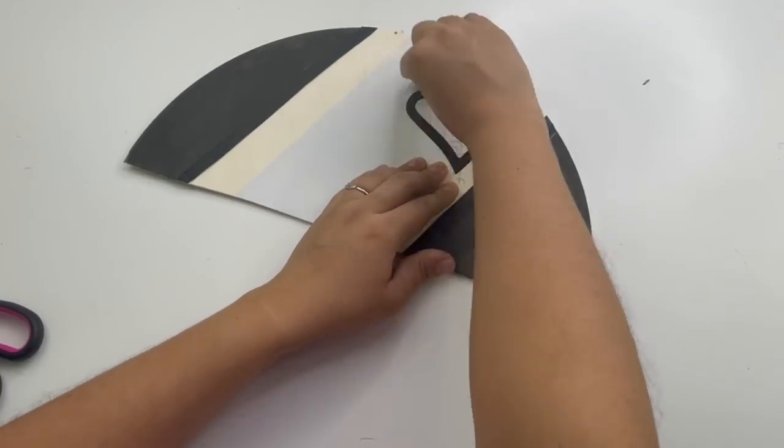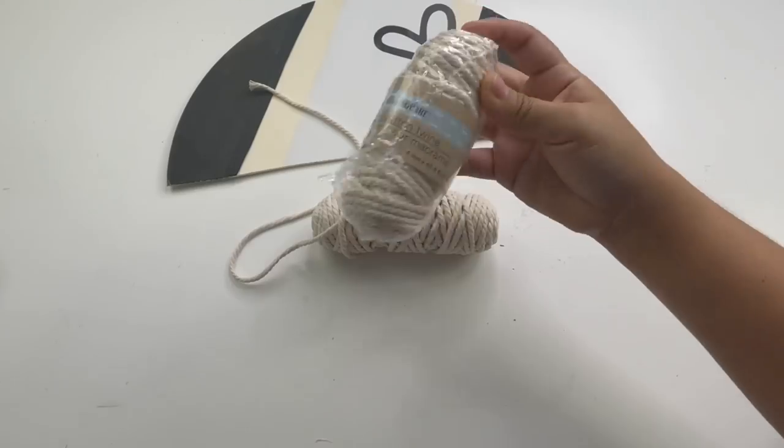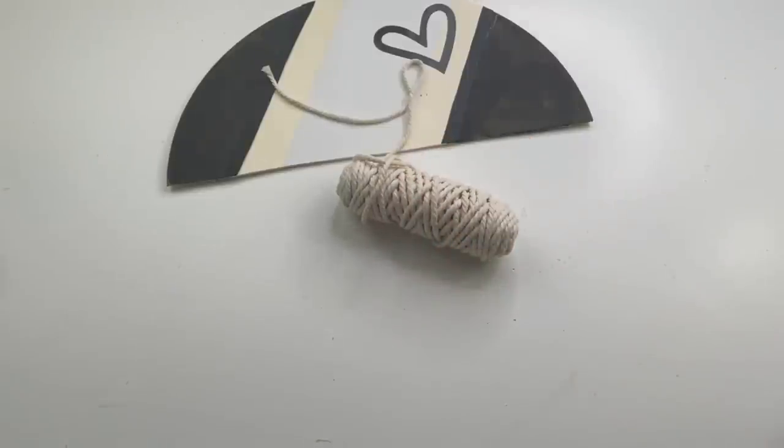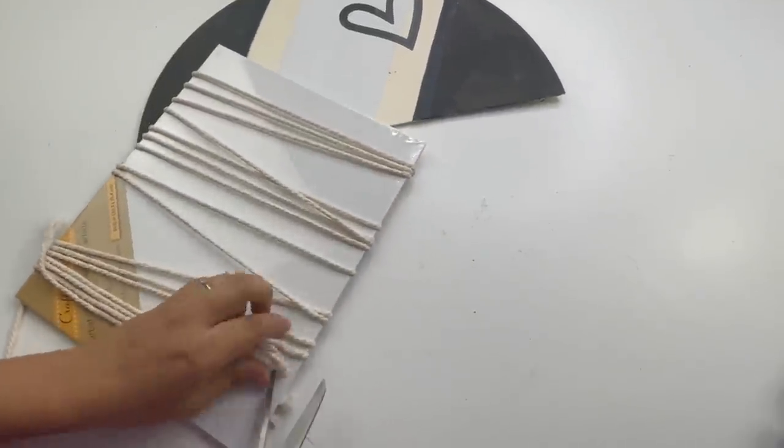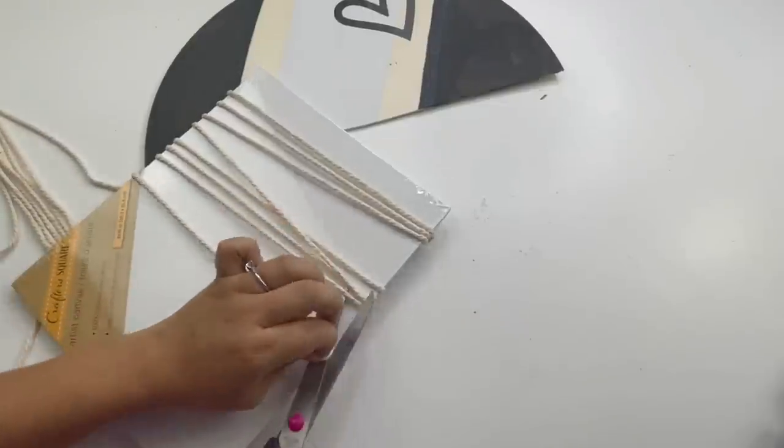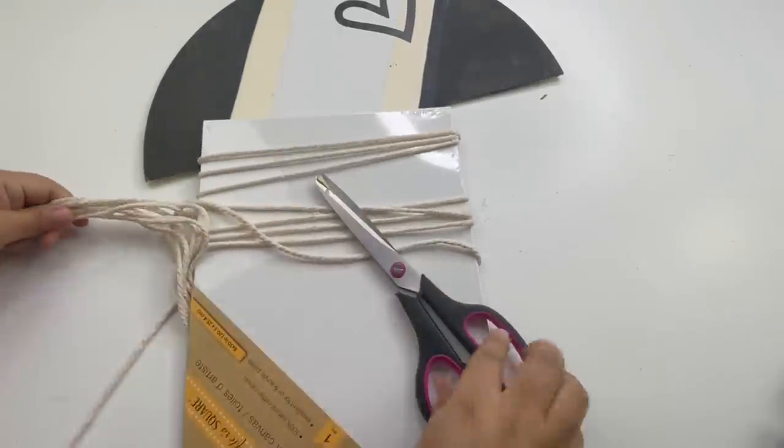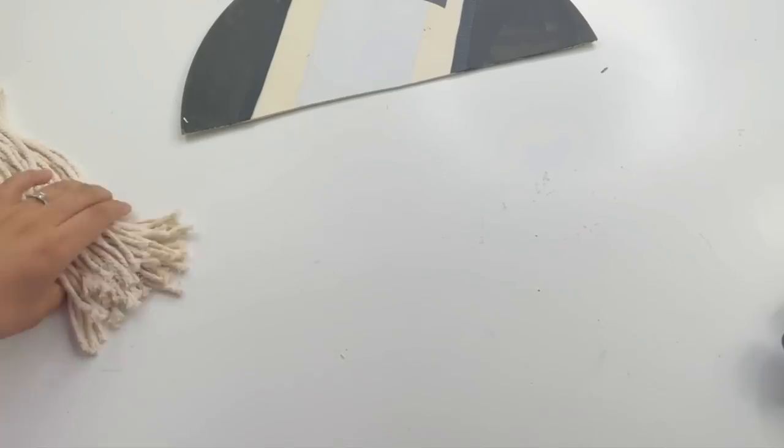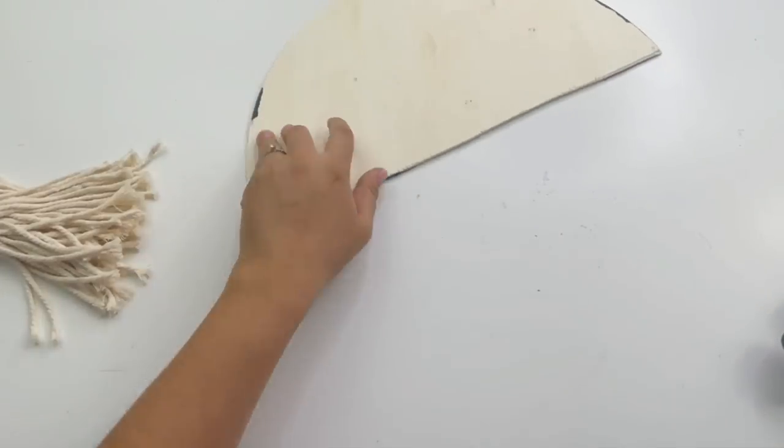Now using this Dollar Tree macrame string, I am going to just cut it using this canvas to make it easier. Now I'm going to flip the sign and glue them in the back using some hot glue.